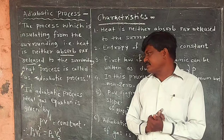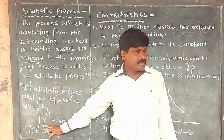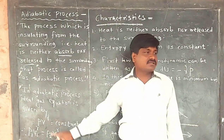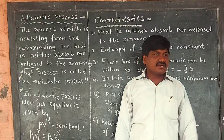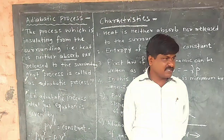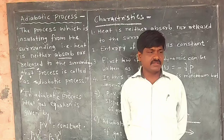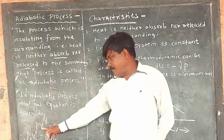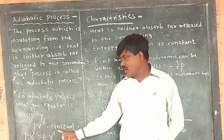Adiabatic process gas equation: PV raised to gamma equals constant. Where gamma is the ratio of two specific heats. PV raised to gamma is equal to constant.